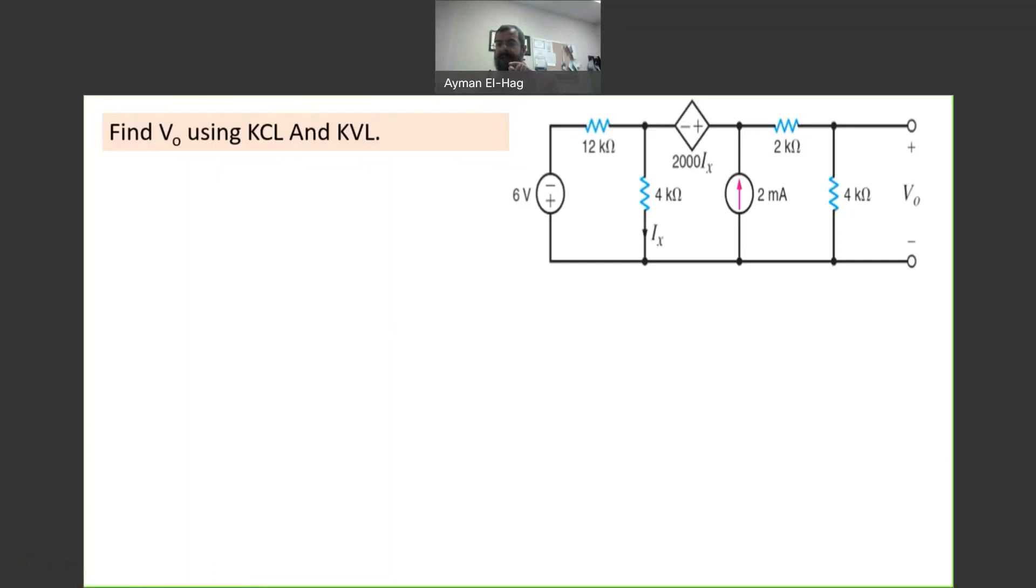Now, what if I have a dependent source? The dependent source sometimes is a sort of confusion, especially if it's a current controlled voltage source or a voltage controlled current source. For example, here in this question we have a current controlled voltage source.